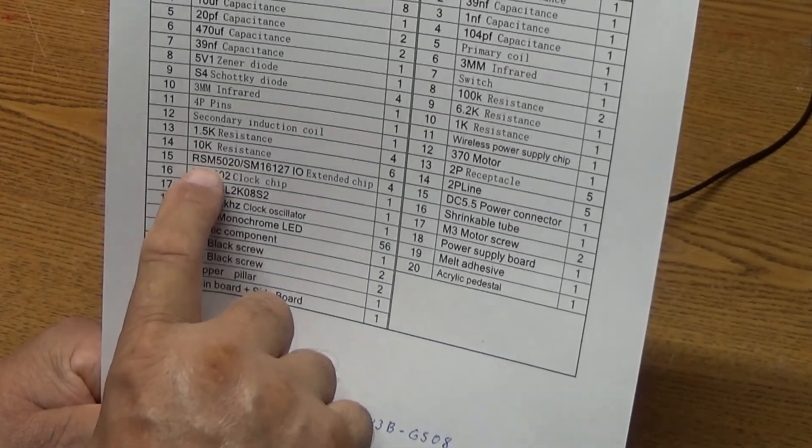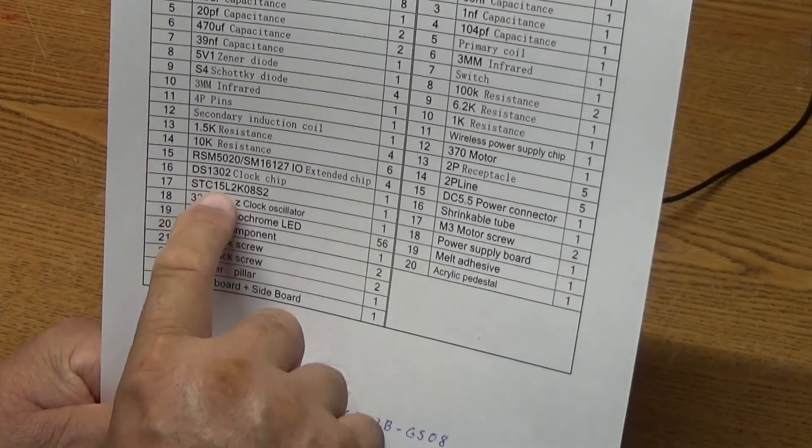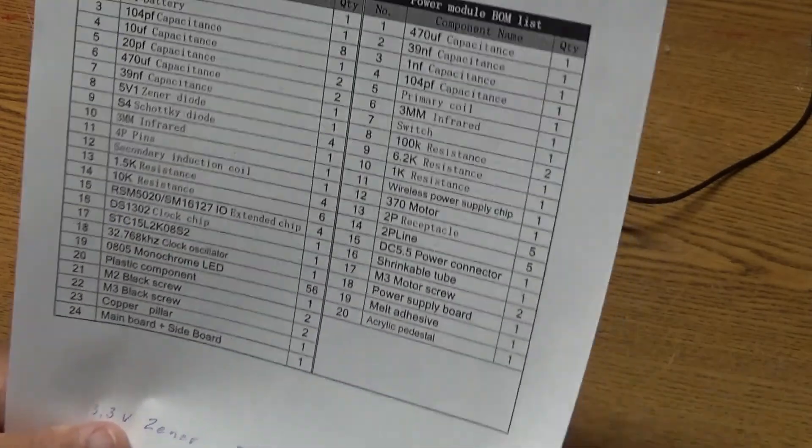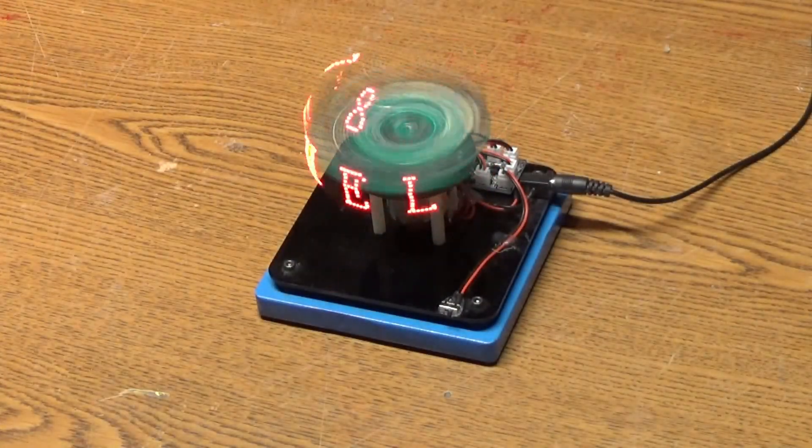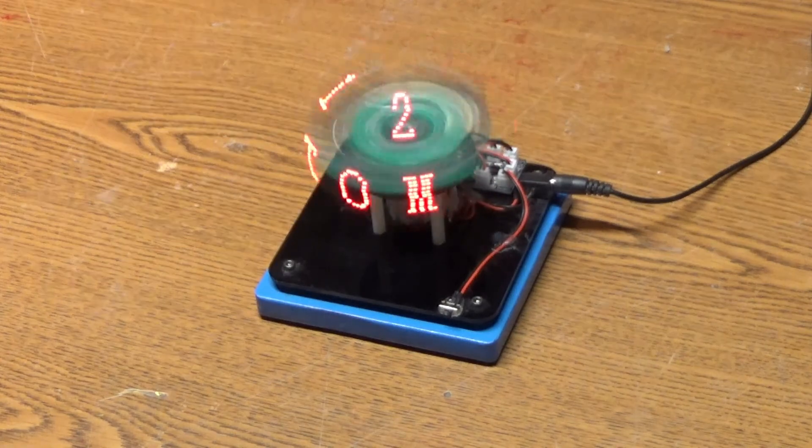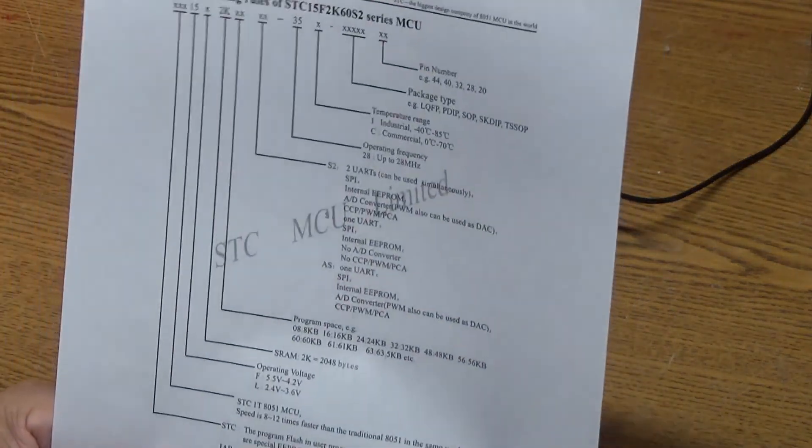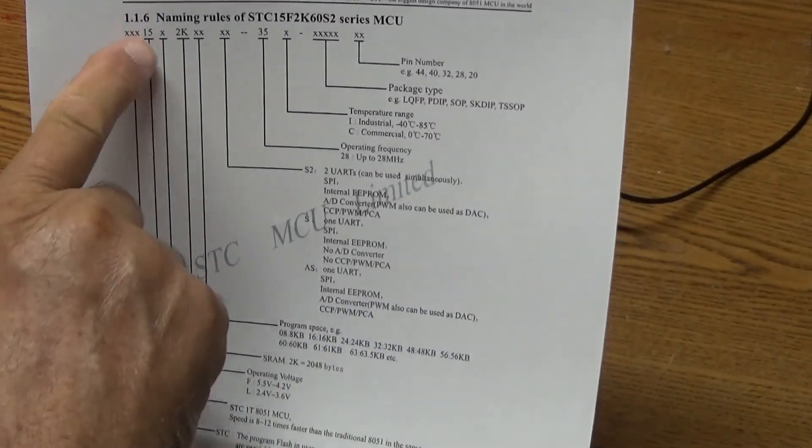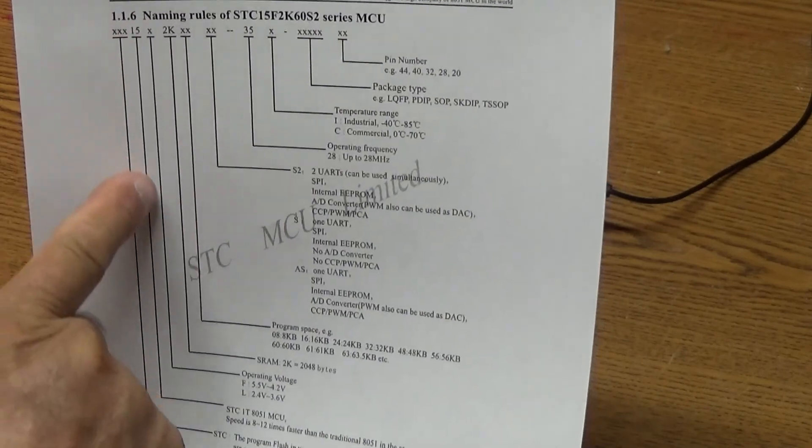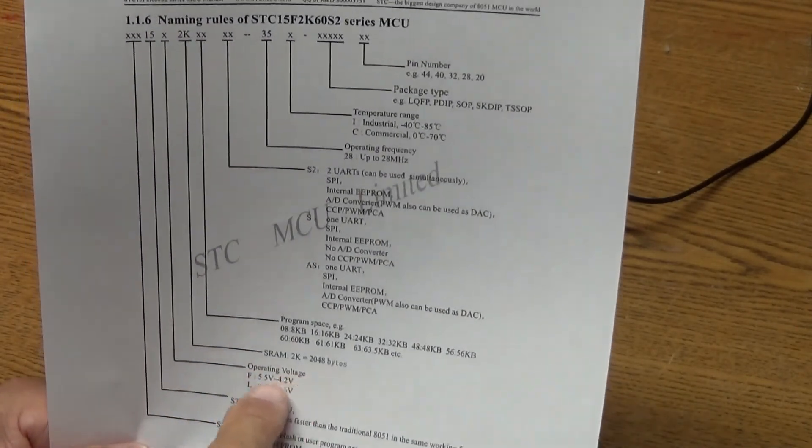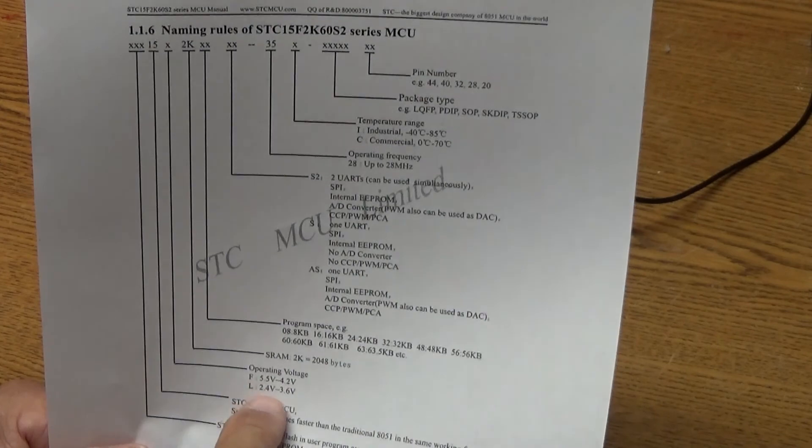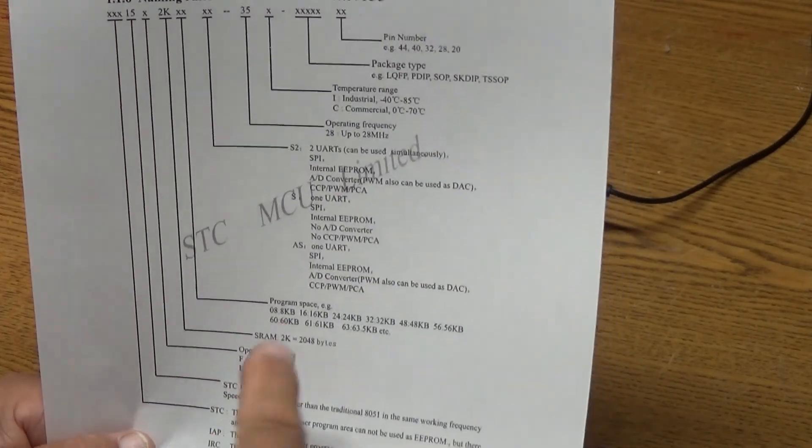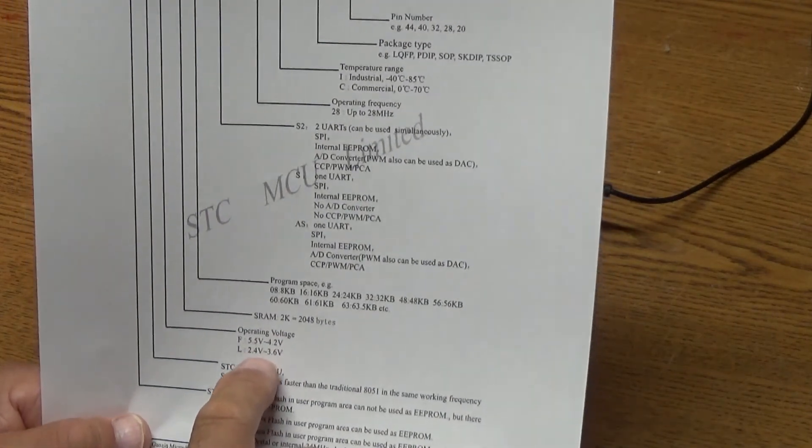But if you look at the spec sheet on this chip, the L after the 15 designates the chip voltage. So, go to the spec sheet that explains the part numbering and right here, after the 15, if you go down here, it says operating voltage and L is 2.4 to 3.6 or 3.3 volts is the standard for chips.